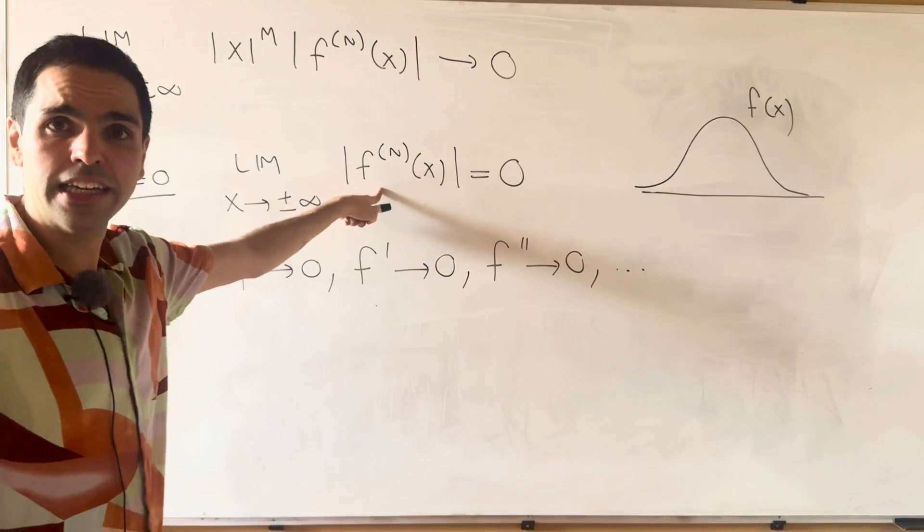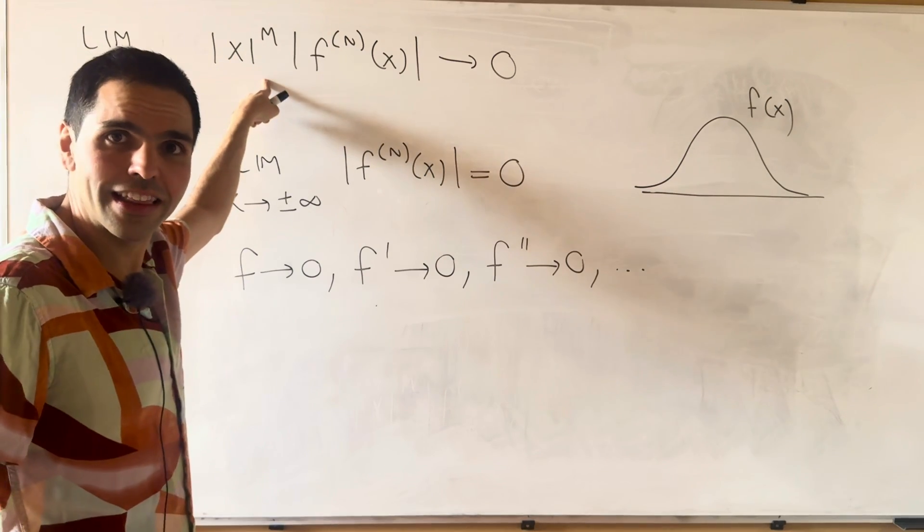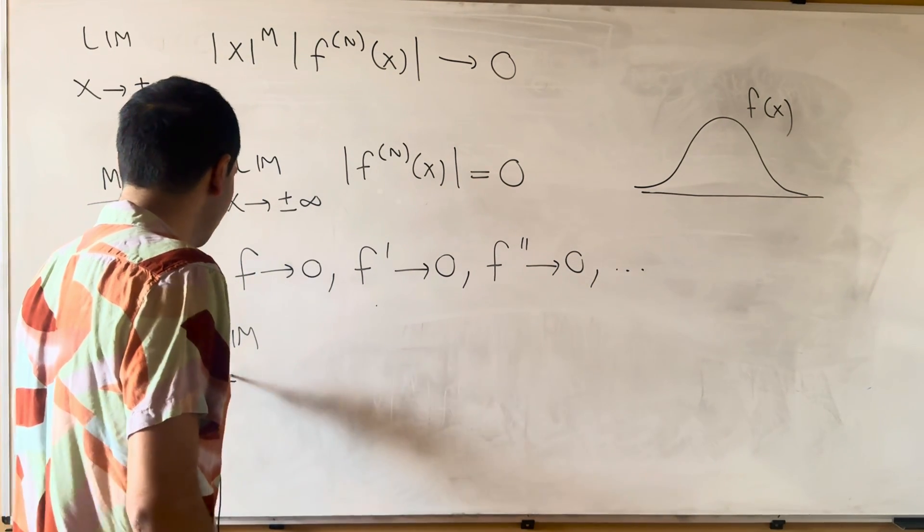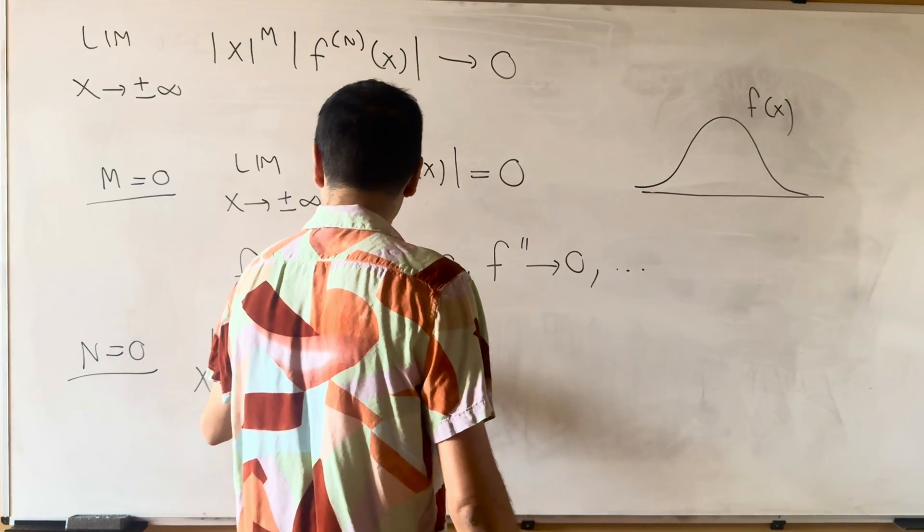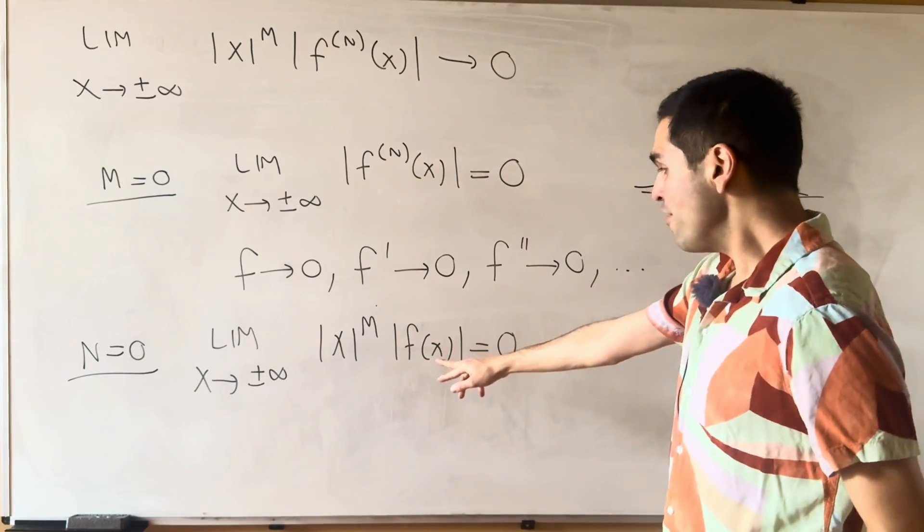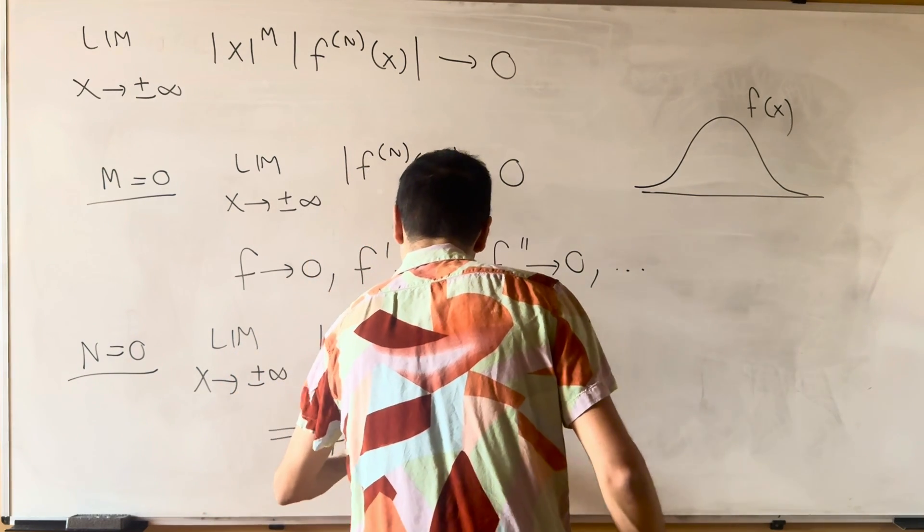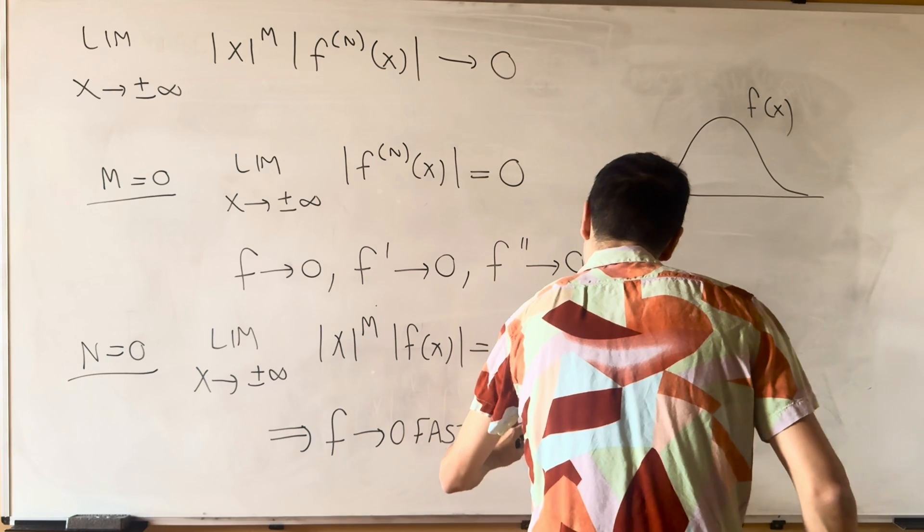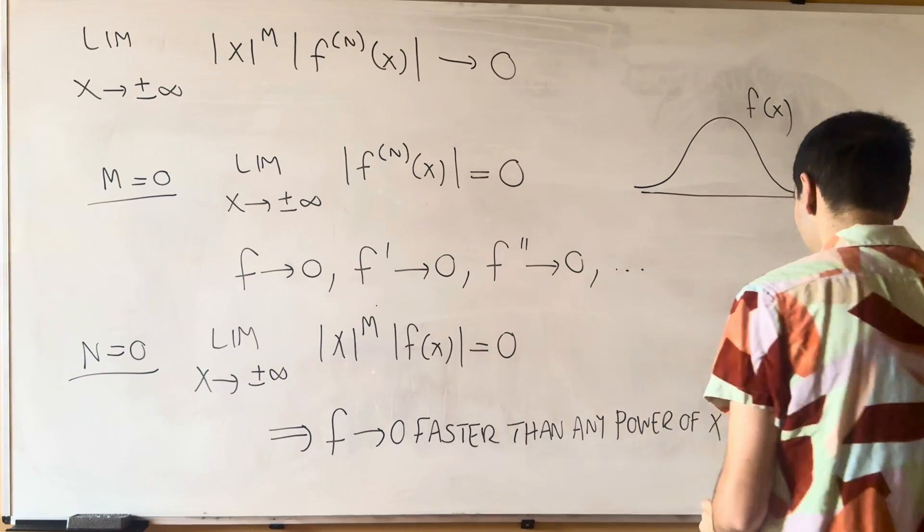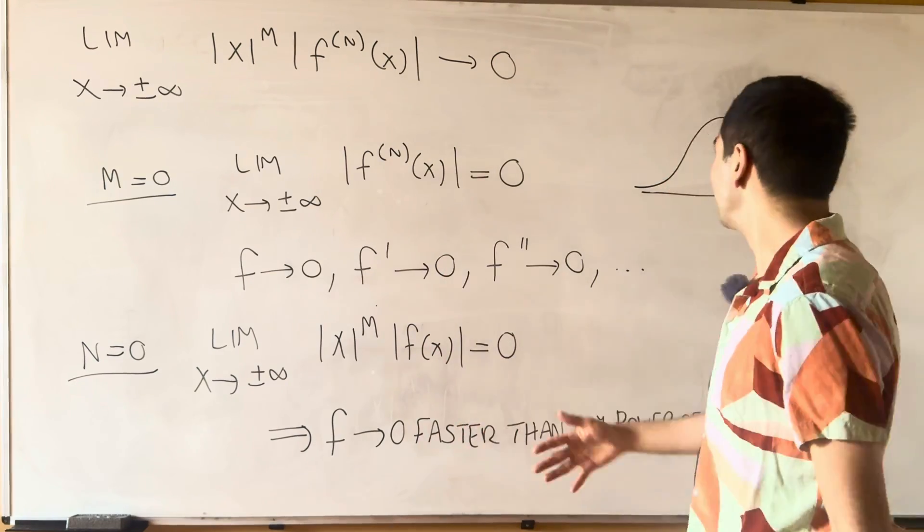So strictly speaking, for instance, the function one over x would satisfy this. However, this says more than that, and that is the case now n equals zero, because in that case we get limit x goes to plus or minus infinity of x to the m, f of x is zero. Meaning that f goes to zero faster than any power of x. So in other words, it's less than 1 over x, less than 1 over x squared, less than 1 over x cubed, et cetera.